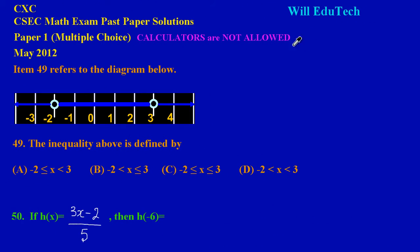It's a pleasure having you again my friends here on Will EduTech, and in this video we'll be looking at the solutions to question 49. It states item 49 refers to the diagram below, and here we have our number line.